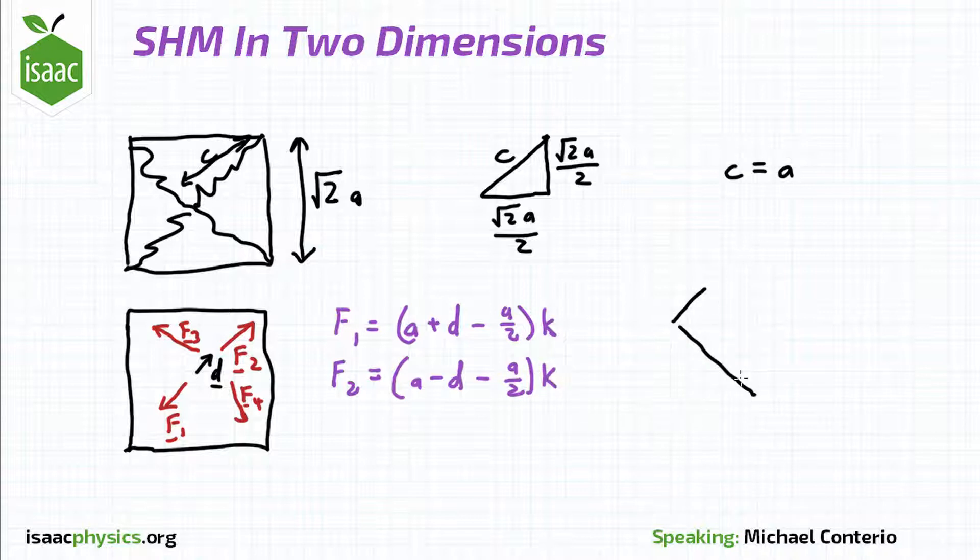For F3 and F4, we need to work out the distance that the spring has been stretched. Looking at F4, we can draw this triangle relating the displacement d, the length of the spring at equilibrium a, and the length of the spring now l. Using Pythagoras's theorem, this gives us the magnitudes of F3 and F4 as (l - a/2)k.